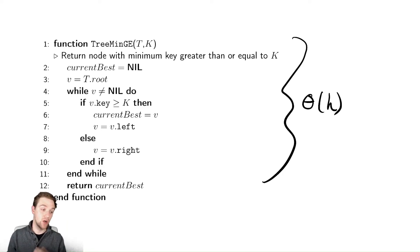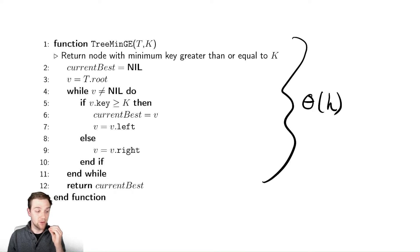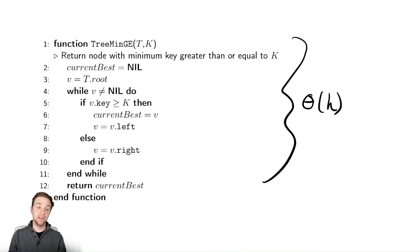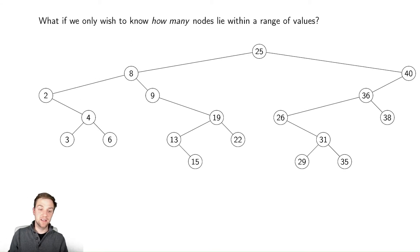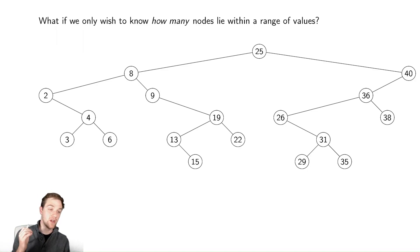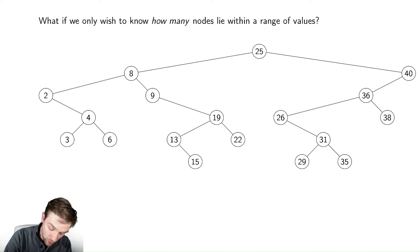I'll let you figure out how to code the max-less-than-or-equal variant by switching the comparisons around. A somewhat related problem is: how do we count the number of nodes greater than or less than a certain value? Let's begin with the more abstract version — what if we want to count the number of values within a range?